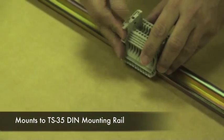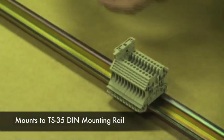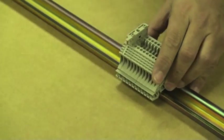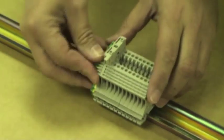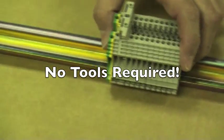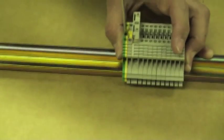All of these terminal blocks mount on industry standard TS-35 DIN mounting rail. Most of the blocks snap easily onto the rail without requiring any tools.